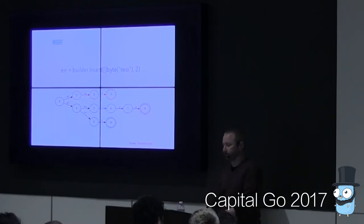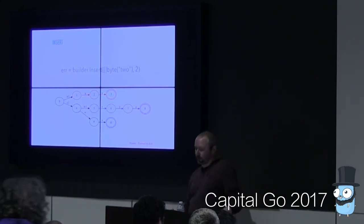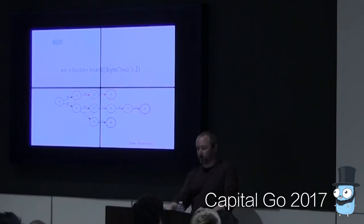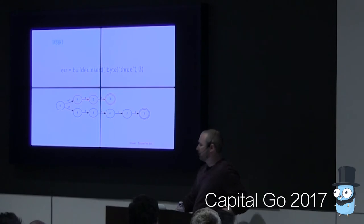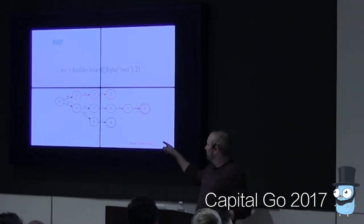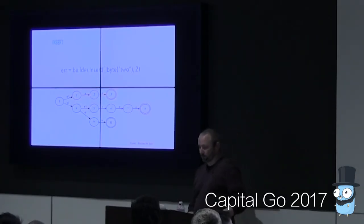Now we insert the final string 'two'. Just like before, we figure out where it diverges from the existing structure. This time, the previous key also started with T, so this one branches off starting at state 4. New transitions for W and O are added. There's also a subtle change: the transition from 0 to 4 previously had a value of 3, but it's now decremented to 2, with the additional 1 pushed down to the H transition. This keeps the sums correct — 'three' still sums to 3 and 'two' correctly gets the value 2.